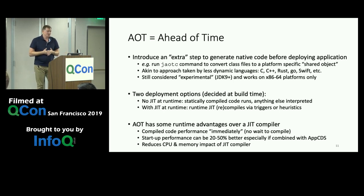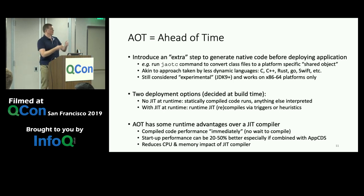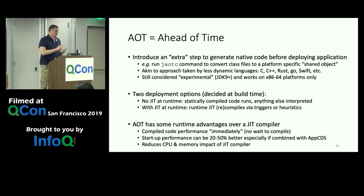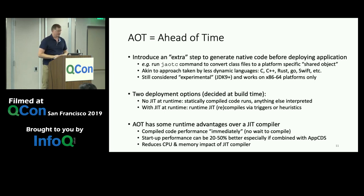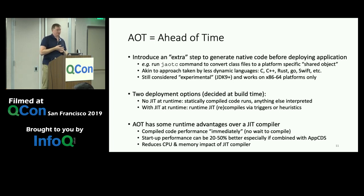AOT has some runtime advantages over a JIT compiler. You get compiled code performance immediately — no need to watch the program, figure out which methods are running a lot, queue them, run the compiler, generate native code, and inject it. You just load the code into your process and it runs. Startup performance can typically be 20 to 50% better, especially when combining with technologies like AppCDS, and CPU and memory impact of the JIT compiler is reduced.